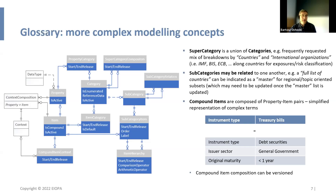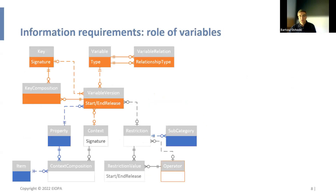Obviously everything here is versioned — we assume these things can change over time due to changes in modeling or fixing bugs. The start and end release will be seen everywhere. So, what are variables?